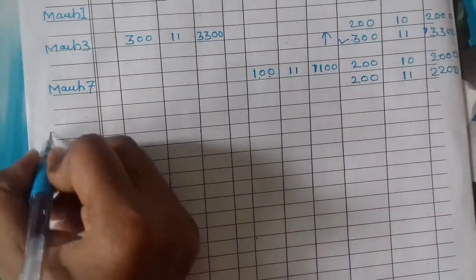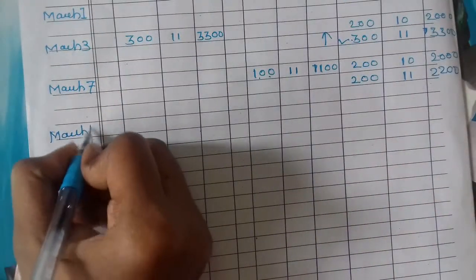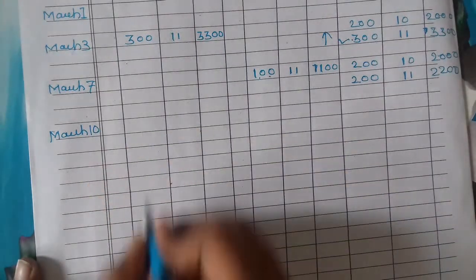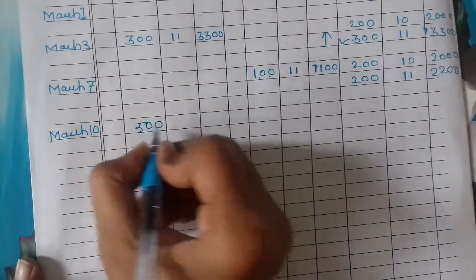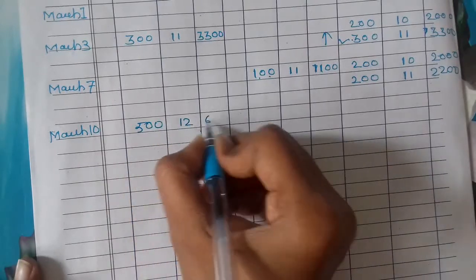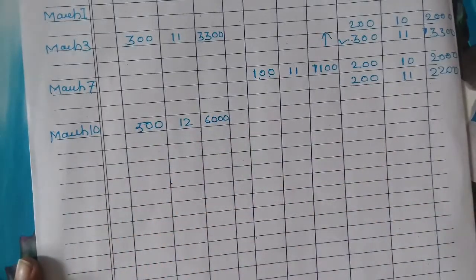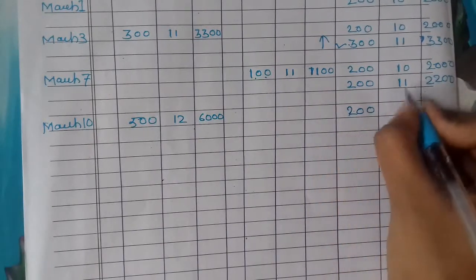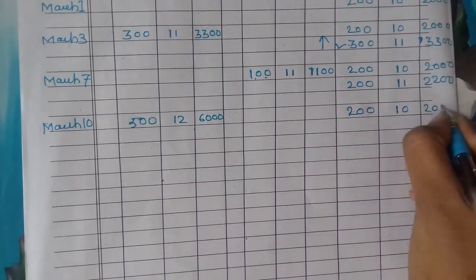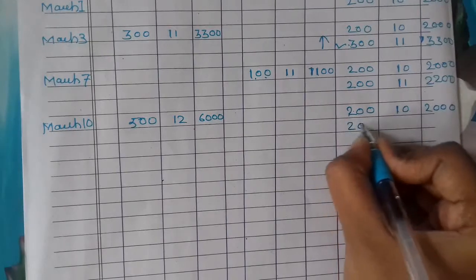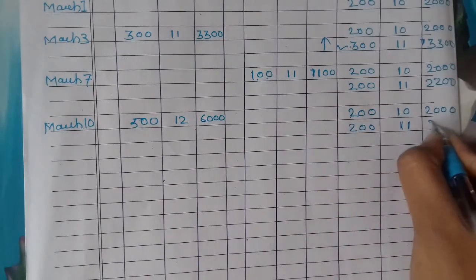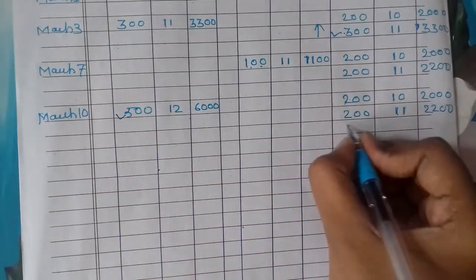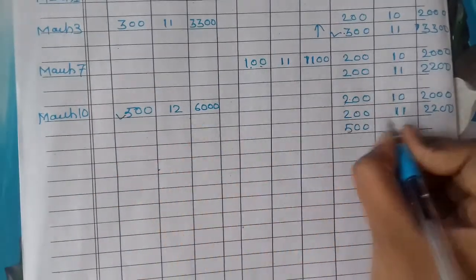Look at the next, March 10. On 10 March, purchased 500 units at rate 12, amount is 6000. Balancing figure: 200 units at 10 is 2000, 200 units at rate 11 is 2200, and new stock 500 units at rate 12 is 6000.